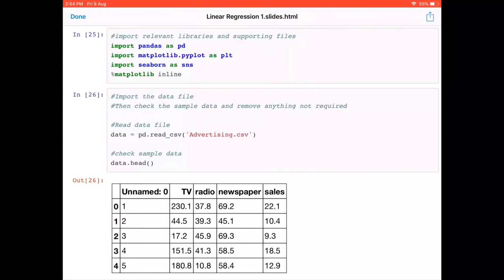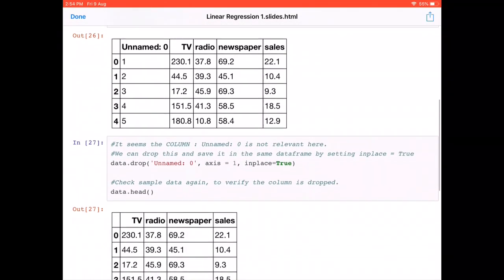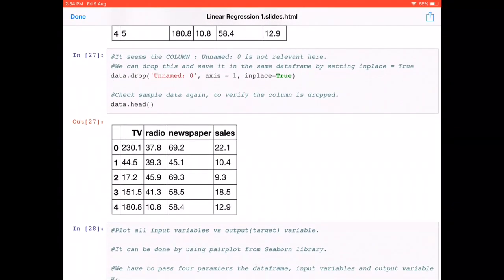Once the data is there, we know there are 200 records. You can print that out, but there are only 200 records. By using the dot head method we can see the first five records here. We also see that there are five columns, and the first column seems to be of no use for us. It's just a sequence of numbers that we don't care about at this point and it's not useful for us.